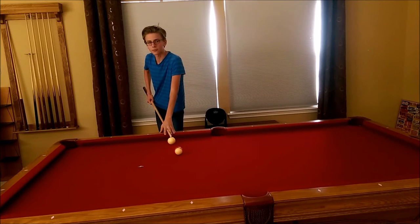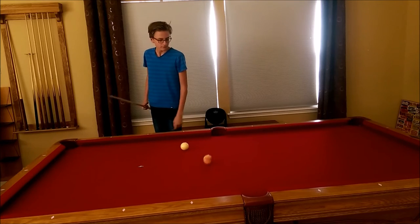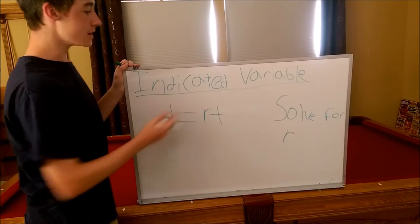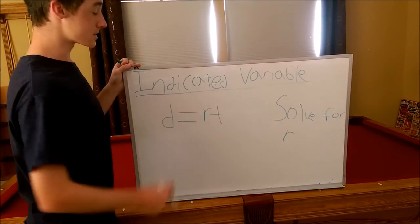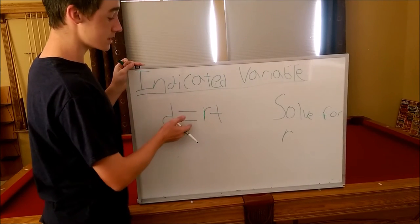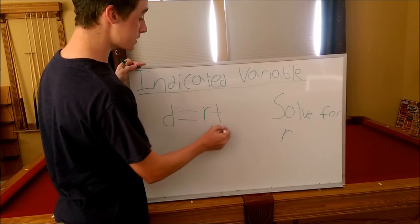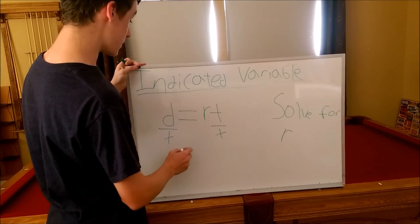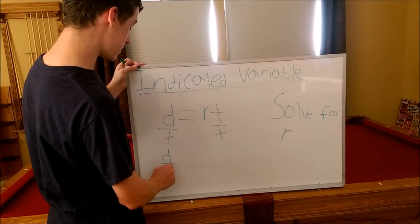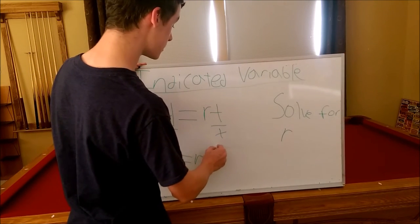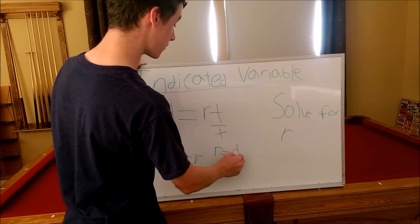Next, we're going to be talking about indicated variables. Indicated variables — it's very similar to solving an equation, except now it involves a lot more letters. So what we're trying to do is solve for r, and we have the equation d equals rt. Simply, we divide both sides by t to get r by itself, just like we did with the equation. So we have d over t equals r, or r equals d over t.